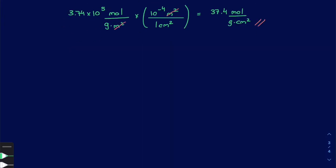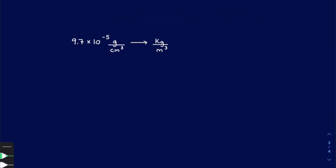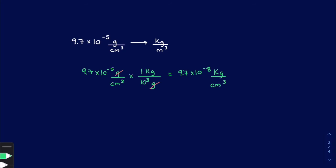Let's do one last example where the unit is cubed. We have 9.7 times 10 to the 5th grams over cm cubed, and we need to convert to kilograms over meters cubed. Let's get rid of grams to kilograms first — grams goes on the bottom, and we know 1 kilogram has 1000 grams. We cancel grams and divide by 1000, giving 9.7 times 10 to the negative 8th, with new units kilogram over cm cubed.